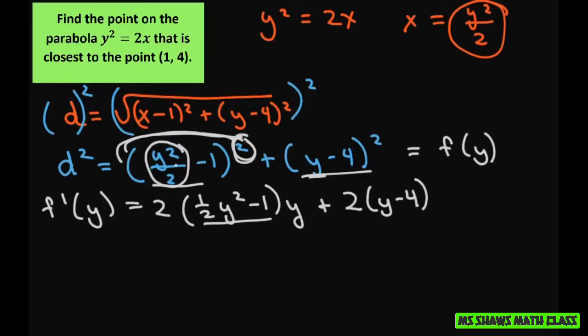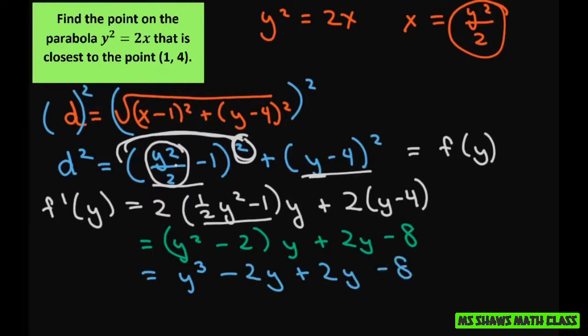Simplifying this, we're going to get y squared minus 2. And then, so this is actually going to be times y plus 2y minus 8. This gives us y cubed minus 2y plus 2y minus 8. Now these cancel. So we end up having y cubed minus 8.